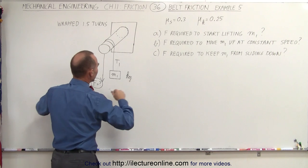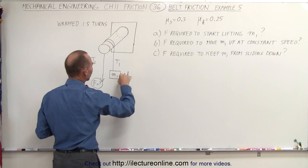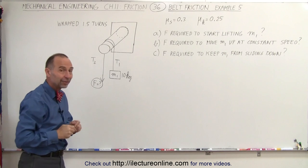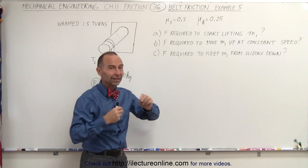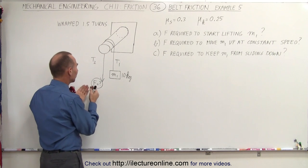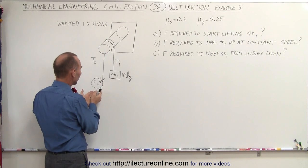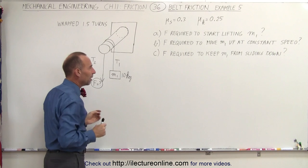We have a mass, M1, equal to 10 kilograms on this side. First of all, the force required to start lifting M1. What is the maximum force by which we can pull on this side before M1 begins to move up?